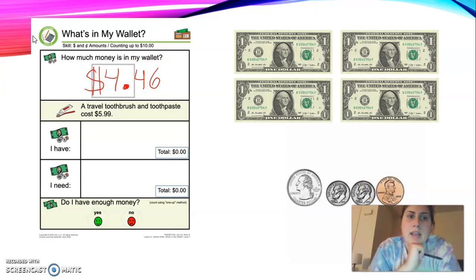So four dollars and 46 cents. So a travel toothbrush and toothpaste cost $5.99. Figure out the rest of your worksheet and see if you can get the right answer.